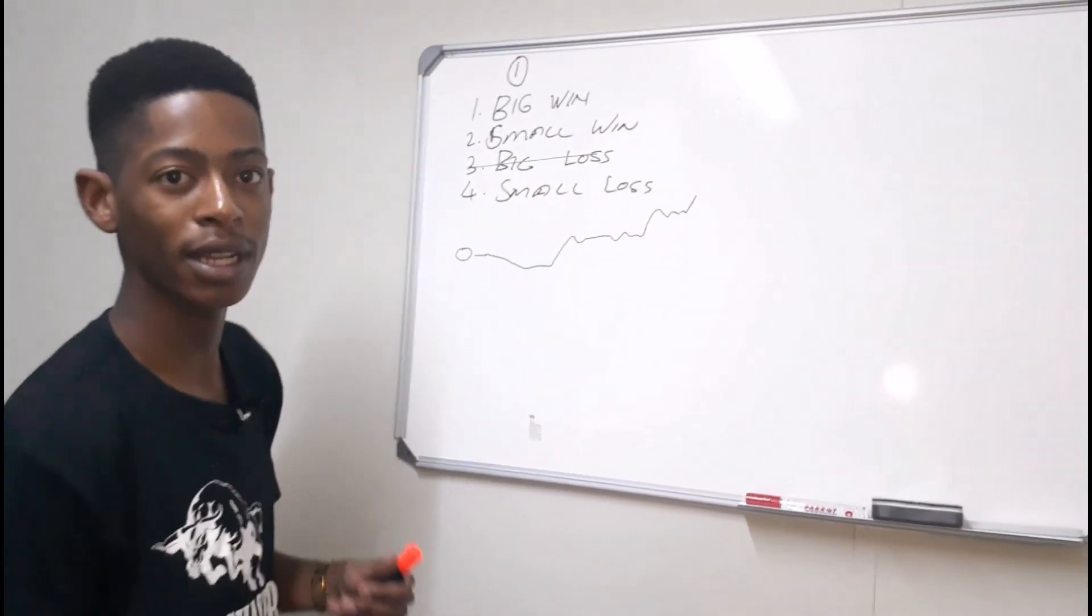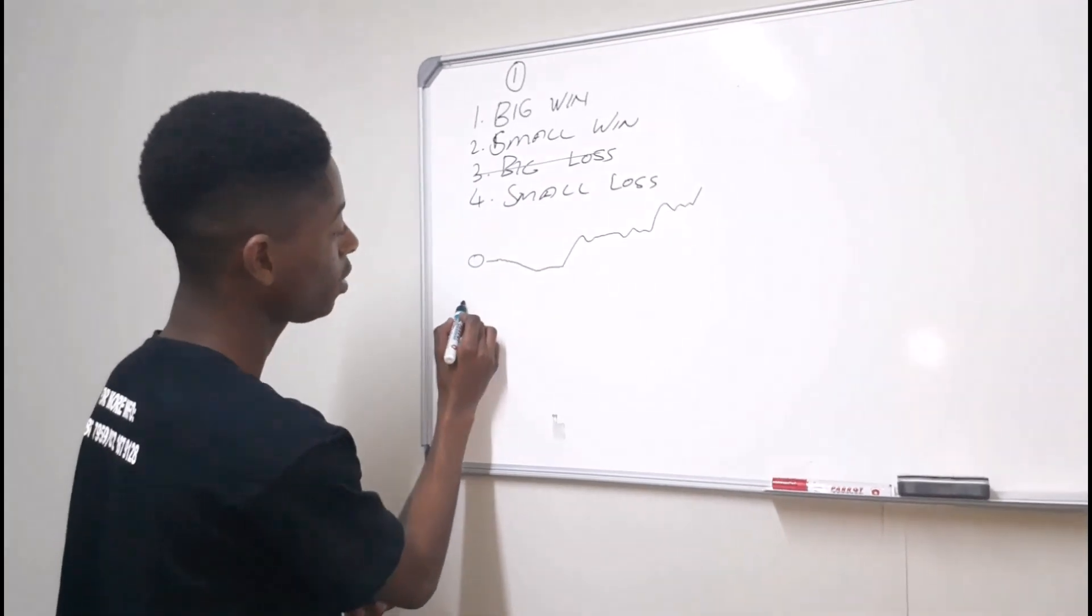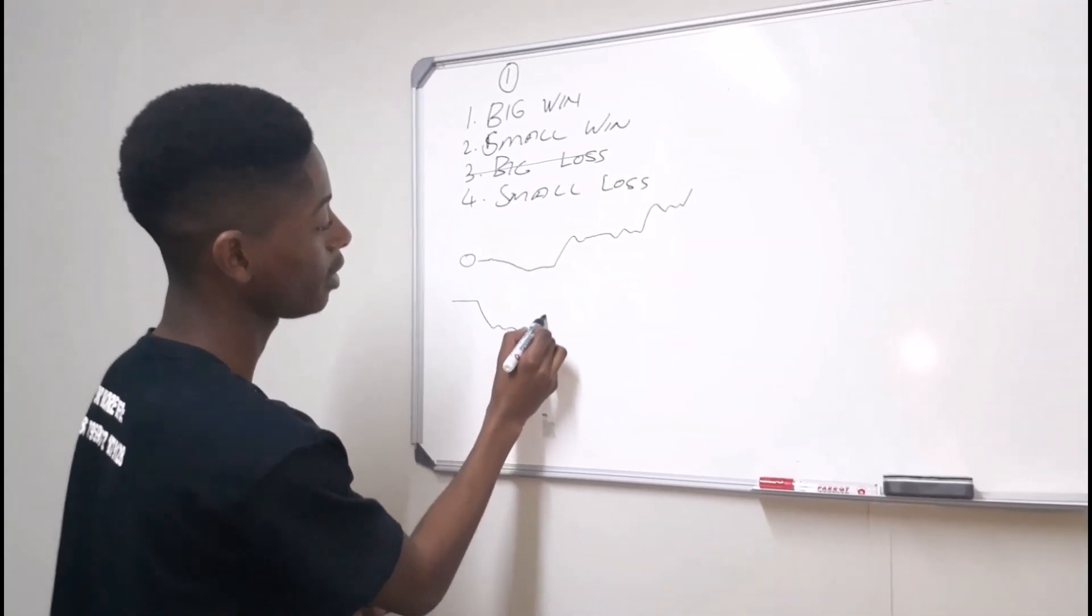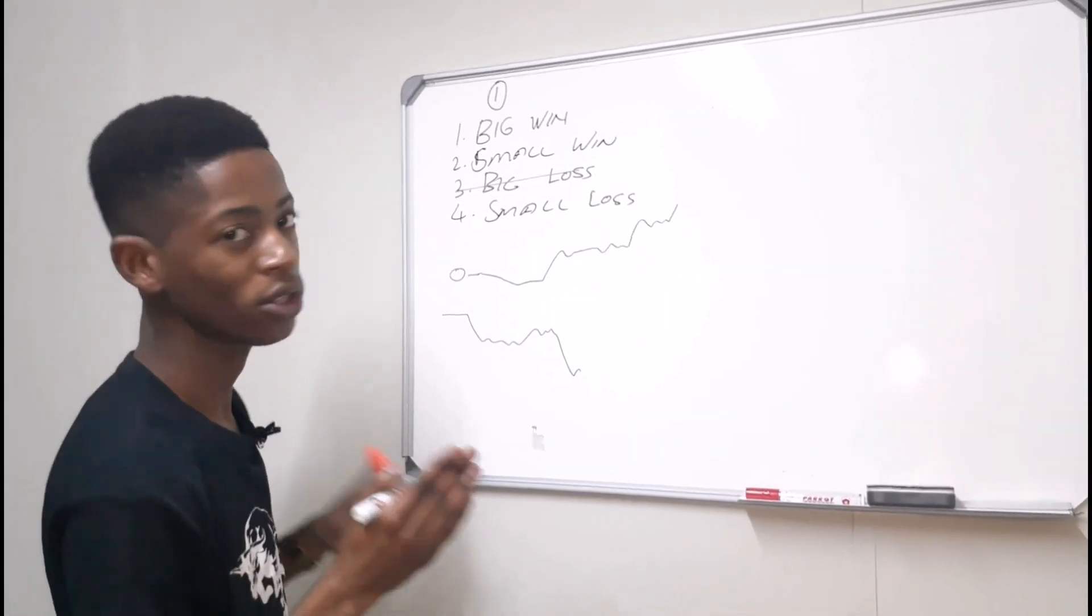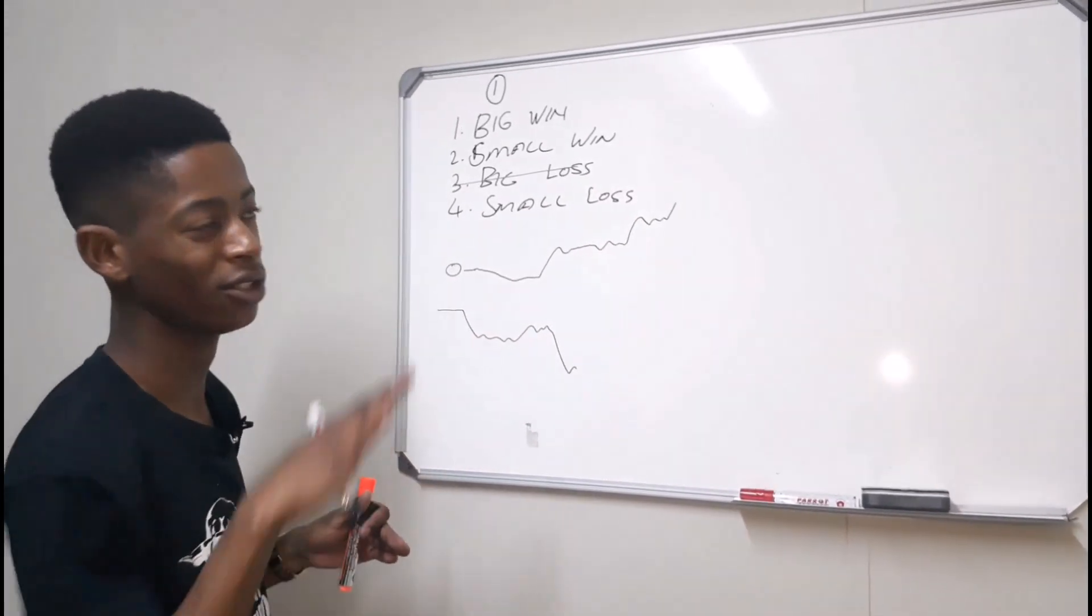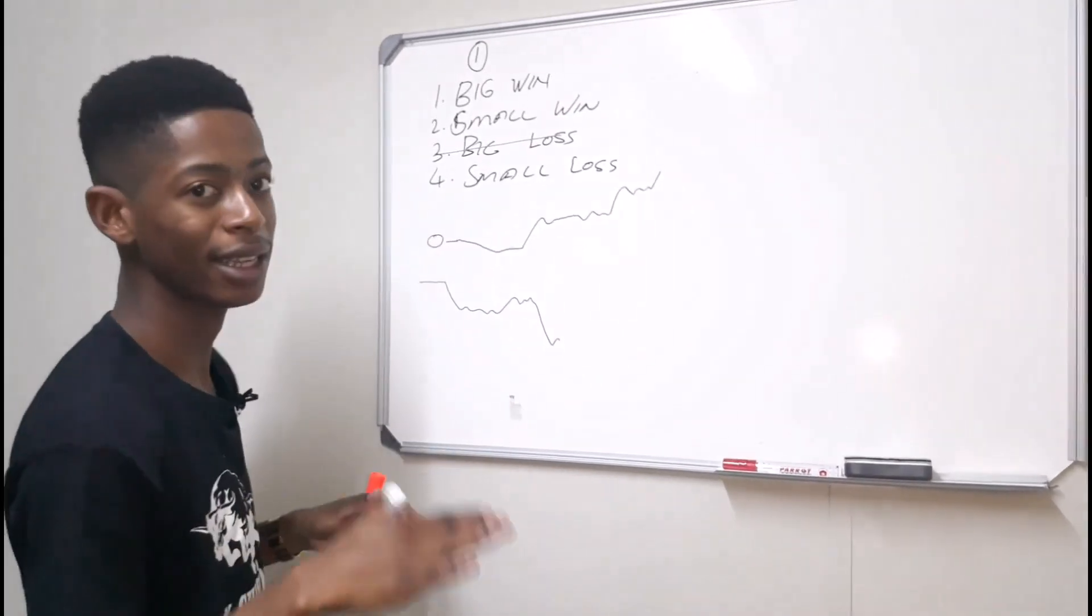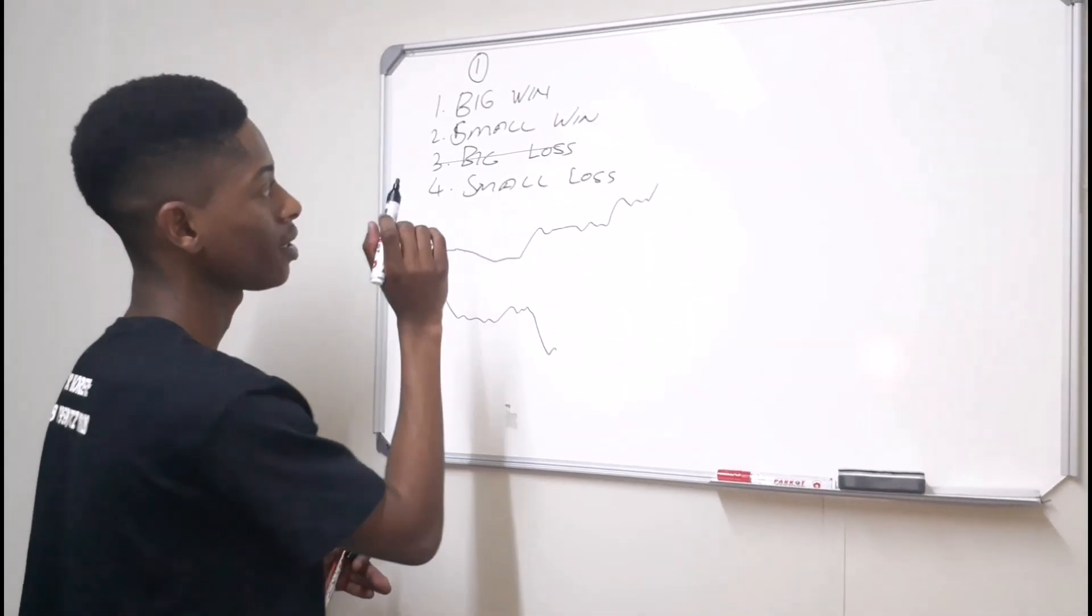But if you do experience big losses, it will do something like big loss and then like this and then just a big win and then a big loss. Do you get that? Like it's not a constant number. So when I keep on going up, even though it's not like shoot all the way upwards, it moves upwards in a steady manner. So this is the first secret.